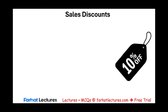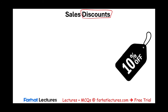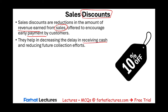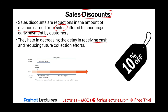Just like we had purchase discounts, the seller also offers a discount to entice the buyer to pay early. Sales discounts are reductions in the amount of revenue earned from sales, offered to encourage the buyer to pay early. This helps decrease the delay in receiving cash and reduces future collection effort. We give a credit period — let's assume 30 days. If the customer pays within the discount period, say 10 days, we'll give them 2% off. The terms are expressed as 2/10, net 30.